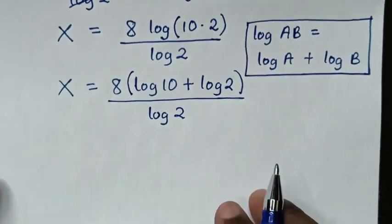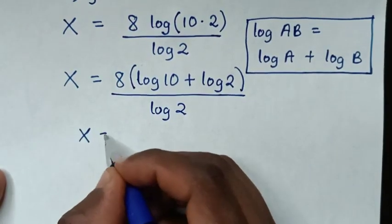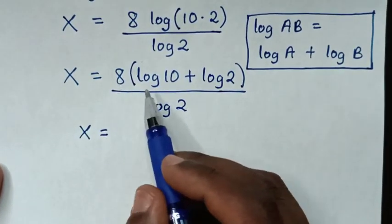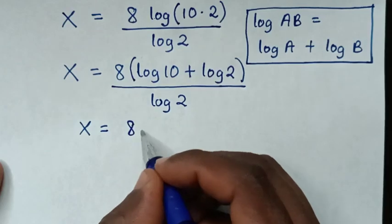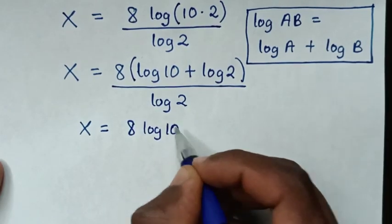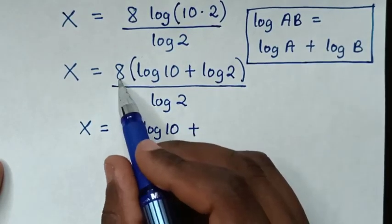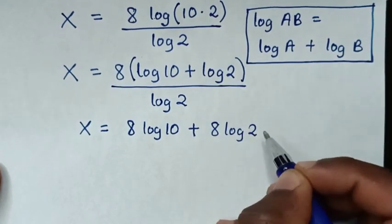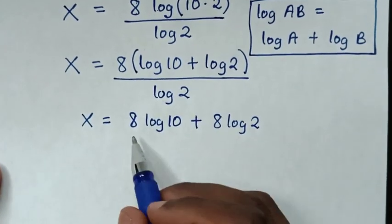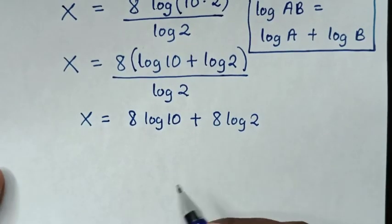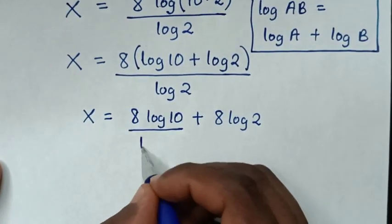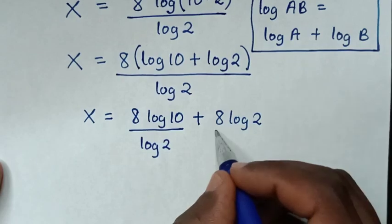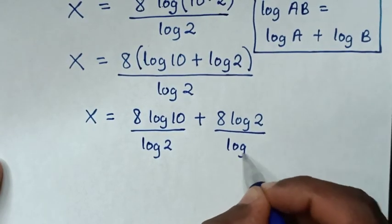Then in the next step, it will be x is equal to 8 times log of 10, then plus 8 times log of 2. Then we'll divide by log of 2 in this part and this part, so it will be over log of 2.